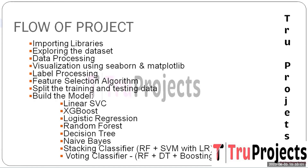XGBoost, an advanced boosting algorithm, is integrated to enhance predictive accuracy by iteratively refining weak models. XGBoost creates a strong ensemble learner capable of capturing intricate money laundering patterns within the dataset. Random Forest constructs an ensemble of decision trees, each trained on a subset of the data and aggregating their predictions. Its ability to manage complex data relationships and mitigate overfitting makes it a potent tool for detecting irregular financial behavior indicative of money laundering.